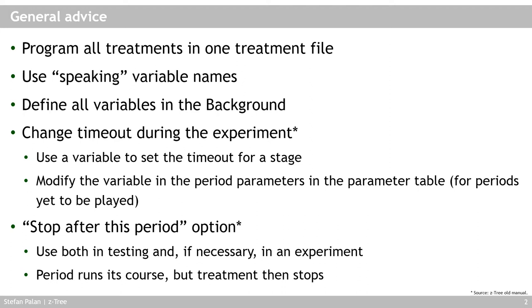The 'stop after this period' option — found under Click Run — is useful both in testing and in the experiment itself. For example, it provides a cheap way of implementing a random ending period: just make the number of periods very long, then stop using this option. In this case, the current period runs its course and then the treatment stops.